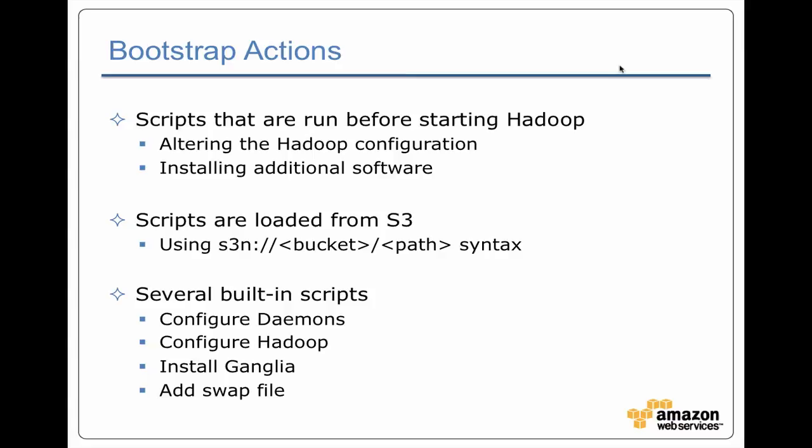What happens is your cluster gets set up — the servers are there, they've got Hadoop installed. Then before your job actually runs, you have the ability to tell Elastic MapReduce that you have one or more bootstrap actions that you want to run to adjust your configuration. Bootstrap actions are loaded from S3, similar to how your job jar gets loaded from S3.